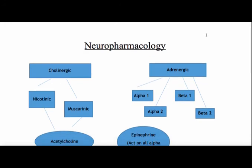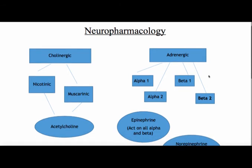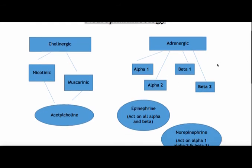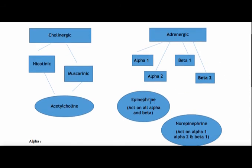This is a review — looking at adrenergic first. Remember, sympathetic nervous system: it's alpha 1, alpha 2, beta 1, beta 2. That's your adrenergic or your sympathetic. Most epinephrine will hit all of these — alpha 1, alpha 2, beta 1, beta 2 — which is why it's so effective for a code or for anaphylaxis. It's kind of rare for a drug to hit all of these receptors.